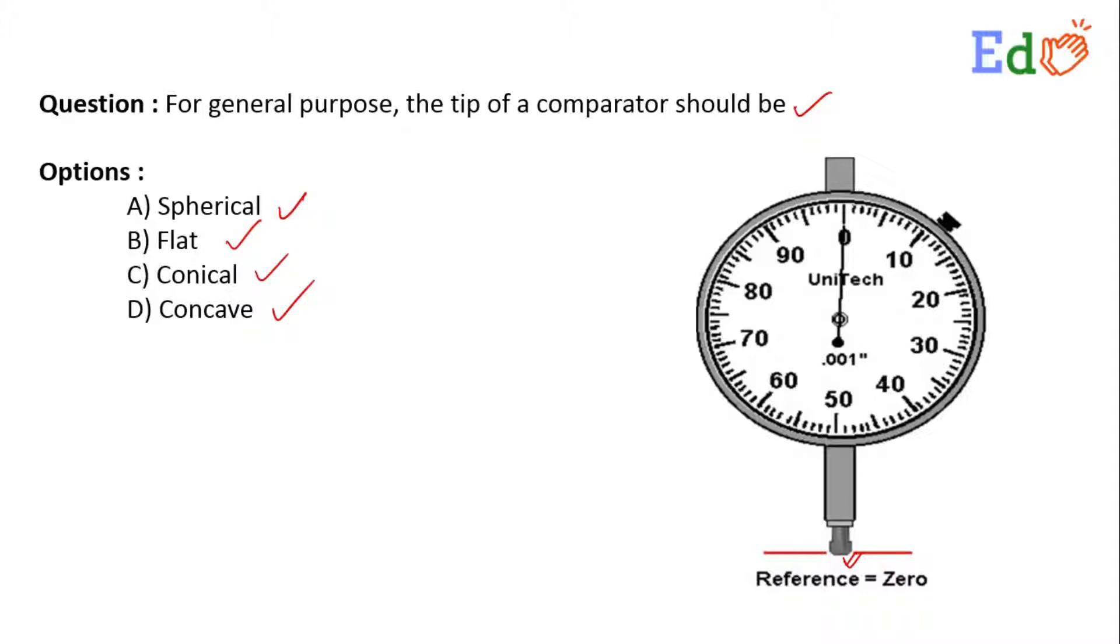Dial indicator tips swing in an arc rather than plunging linearly and usually have spherical tips. This shape gives point contact, allowing for consistent measurements as the tip moves through its arc.